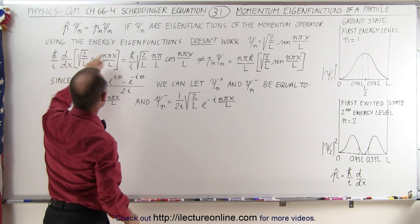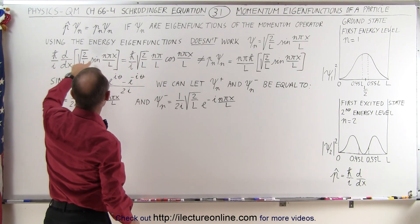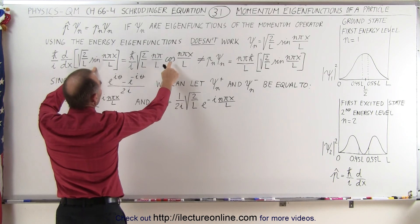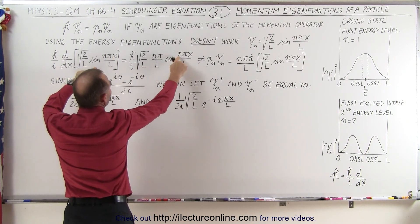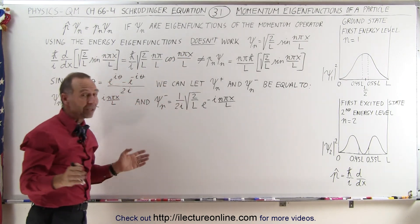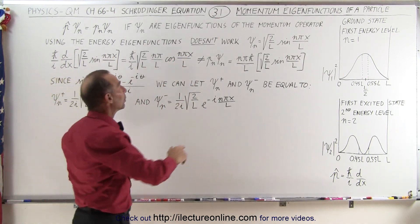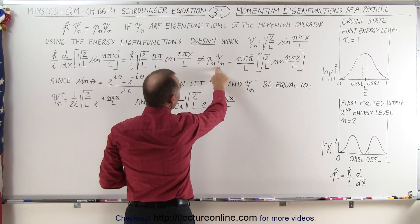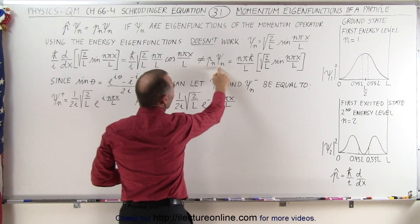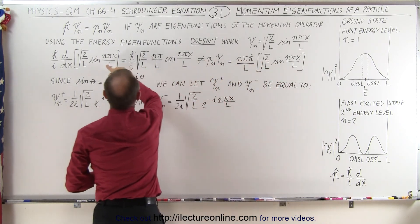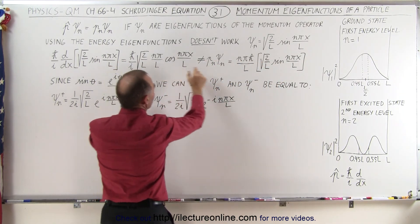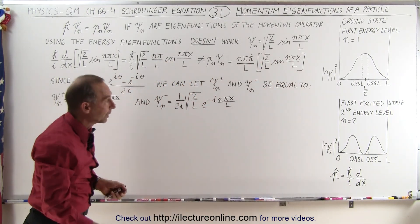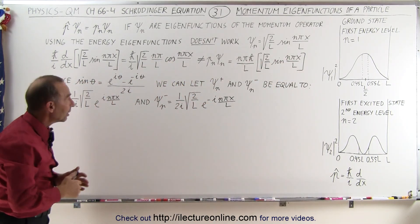We can take the square root of 2L out, then take the derivative of the sine, and we end up with n pi over L times the cosine of n pi x over L. We can see that it's not going to be equal to the eigenvalue times the momentum eigenfunction, because the eigenfunction is a sine function and what we got was a cosine function.